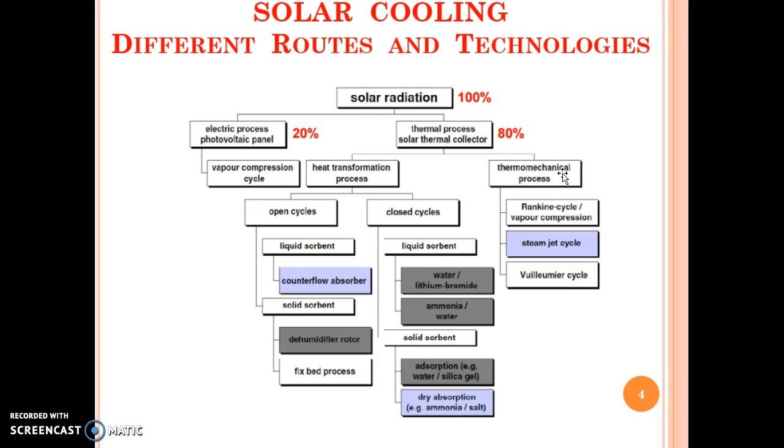One of the categories is heat transformation process, another is thermo-mechanical process. We are going to focus on heat transformation processes where it can be done in an open cycle or in a closed cycle. In open cycle you have options like liquid desiccant and solid desiccants. In closed cycle you have options like liquid sorbent and solid absorber, which are nothing but vapor absorption and vapor adsorption technologies.